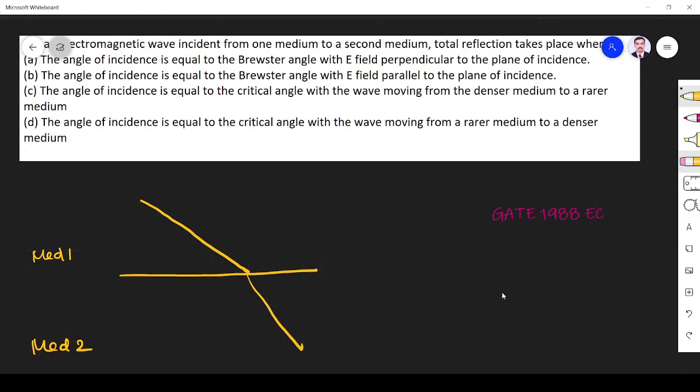...reflection or total internal reflection takes place. Total internal reflection takes place when the wave propagates from one medium to another medium, then only the wave propagation total internal reflection will take place.